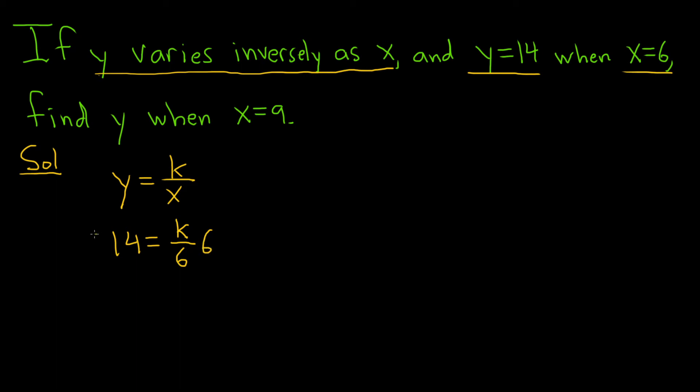So 6, and then put a 6 here on the left. 6 times 14 is 84, and these cancel, and so we have our k. So that means k is equal to 84.